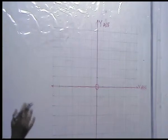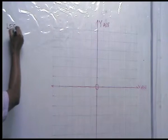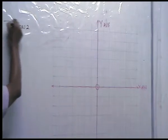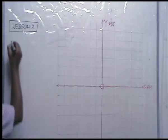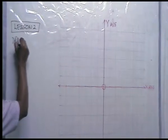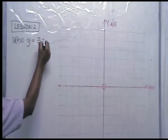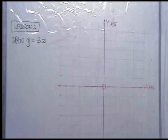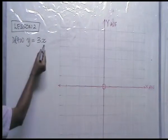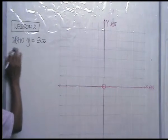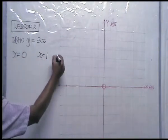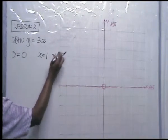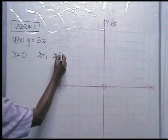Welcome back. Let's call this lesson two. Don't try to learn everything in one day. The question is: draw y is equal to three x. First, make ordered pairs. Let x be zero, let x be one, let x be two.